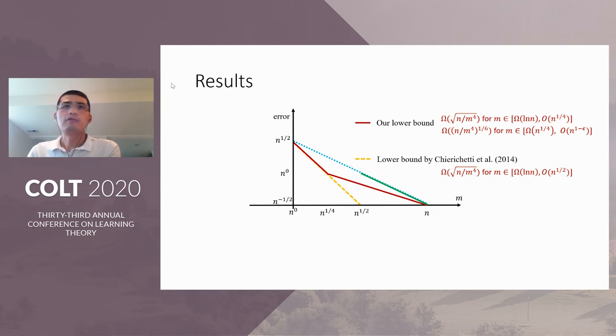We also get lower bound for our problem. The lower bound is different for two different ranges of M. For the first range, when M is between log N and N to the power 1 over fourth, we get a lower bound of the error rate, roughly N to the power 1 over fourth per M. In this range, when M is larger than N to the power 1 over fourth, we can hope to get a vanishing error.